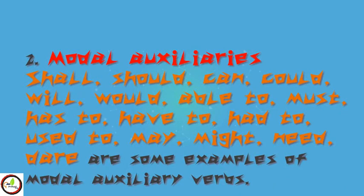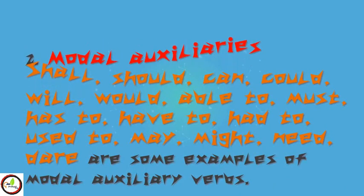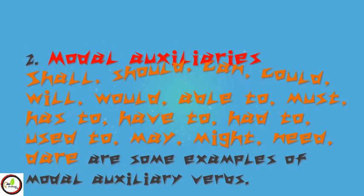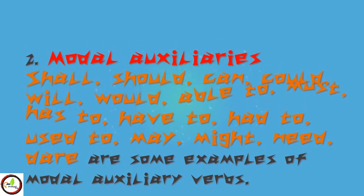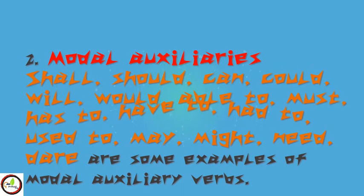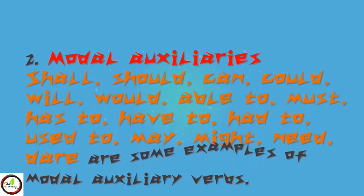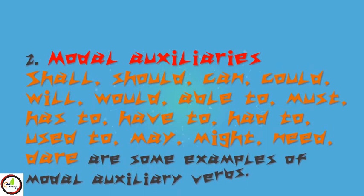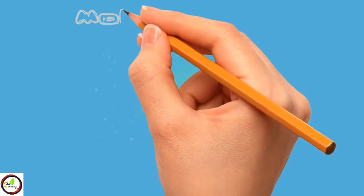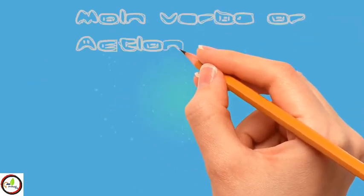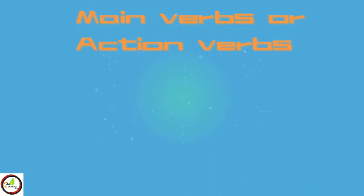Modal auxiliaries include: shall, should, can, could, will, would, able to, must, has to, have to, had to, used to, may, might, and need. These are some examples of modal auxiliary verbs. Type 2: Main verbs, also called action verbs. There are five types of main verbs.